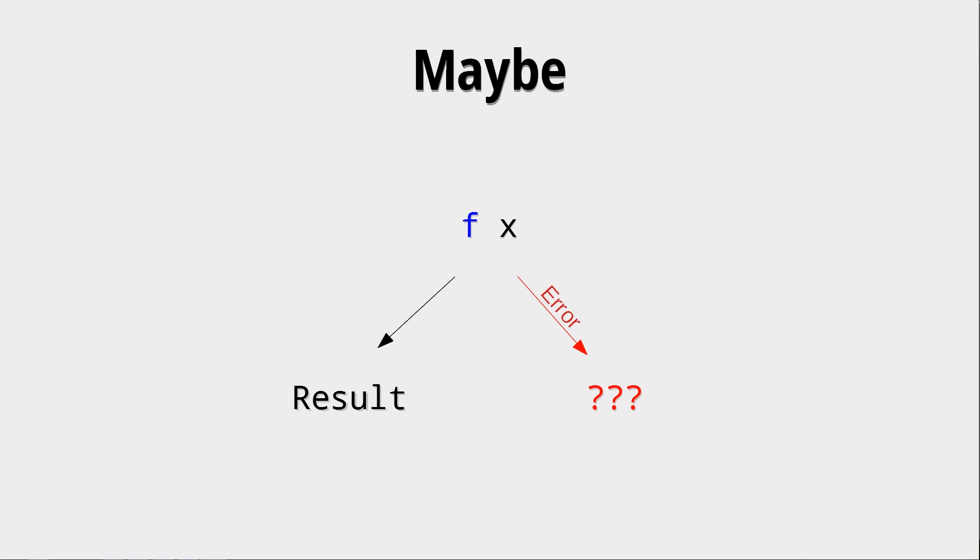Now, in the case of head, it actually throws an exception, but sometimes we do not want to create functions that can throw exceptions, and that's where Maybe is very helpful. Because now we can say that if the result is an actual valid result, we can just return Just result, and otherwise we return Nothing.